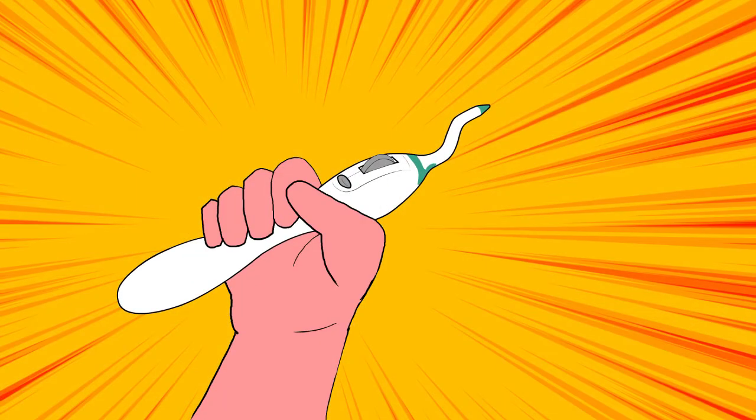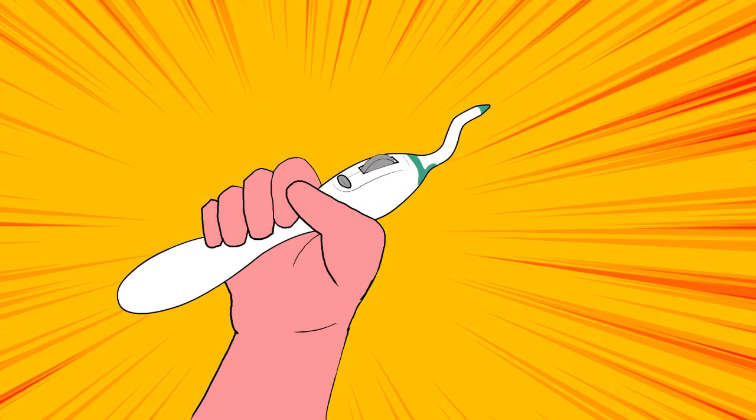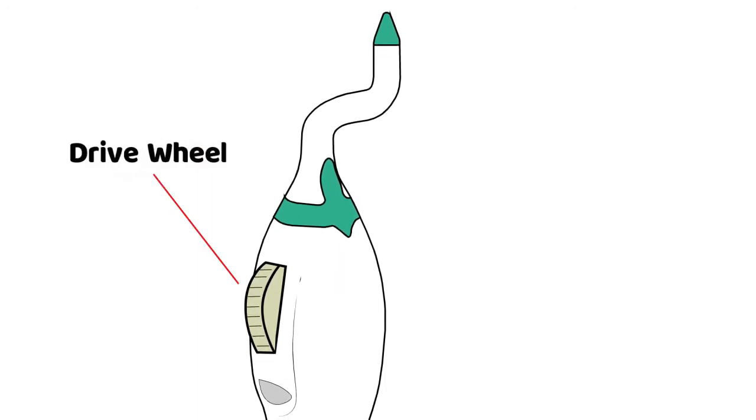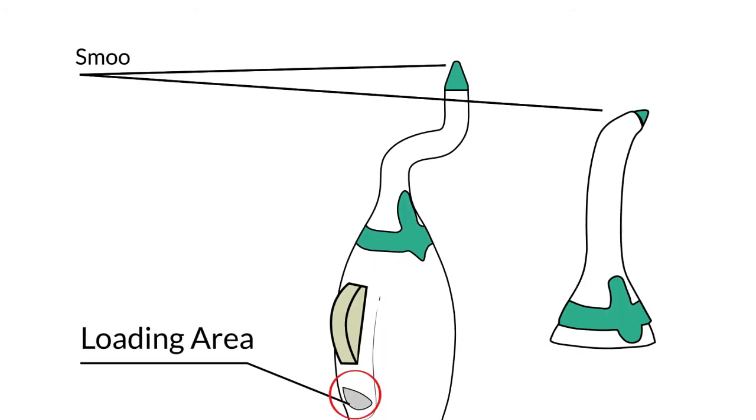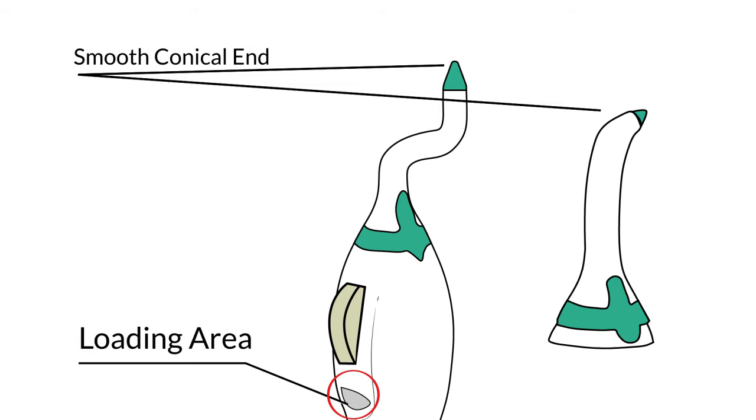The device has an ergonomic body that fits comfortably in your hand, a drive wheel to move the AutoFlosser floss through a dental space, a loading area behind the wheel, and two replaceable tips, each with a smooth comfortable conical end.